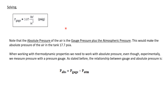Note that the absolute pressure of the air equals the gauge pressure plus atmospheric pressure, which gives 3.07 plus 14.7, or approximately 17.7 PSIA. Remember that we always use absolute pressure in thermodynamic calculations, even though we often measure pressure with a gauge. We must remember that absolute pressure equals gauge pressure plus atmospheric pressure. In this problem, we were asked for the gauge pressure, and that is 3.07 PSIG.